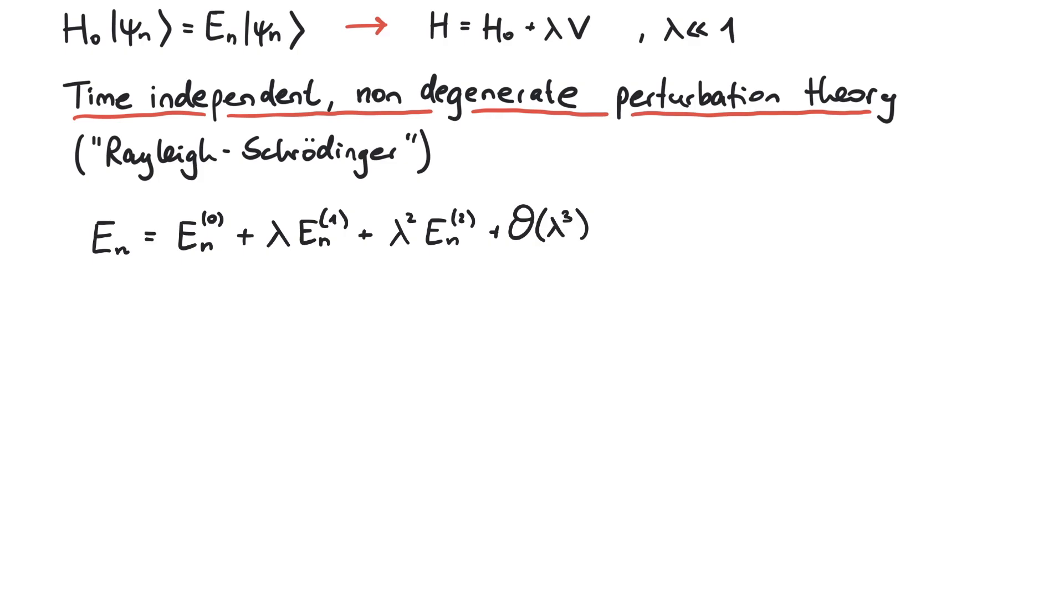The subscript n tells us which eigenfunction we are considering, and the number in brackets indicates the degree of correction. So for instance, E21 is the first correction term to the second energy eigenvalue.